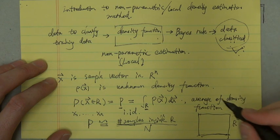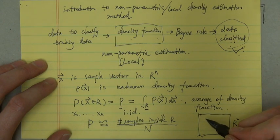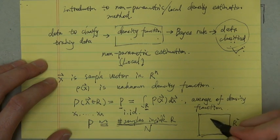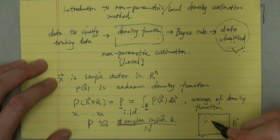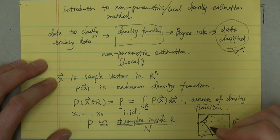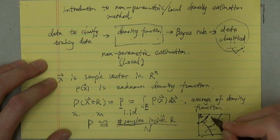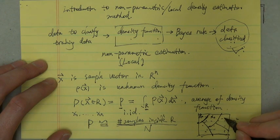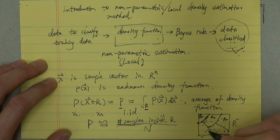So we can draw a picture like this. For example, this is the R² feature space, and we have a lot of samples here. And we have several regions. So this is R₀, R₁, R₂, something like this.